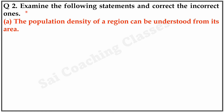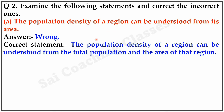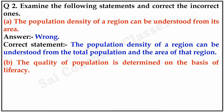Question 2: Examine the following statements and correct the incorrect ones. A. The population density of a region can be understood from its area. Answer: Wrong. Correct statement: The population density of a region can be understood from the total population and the area of that region. B. The quality of population is determined on the basis of literacy. Answer: Right.